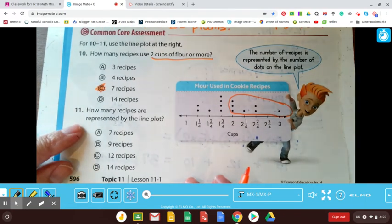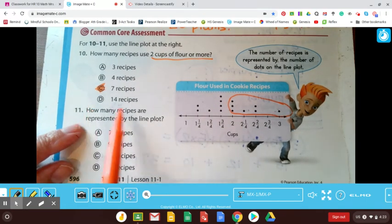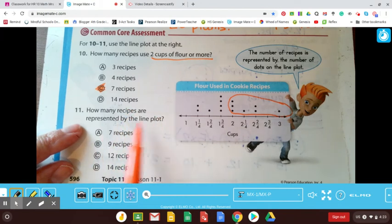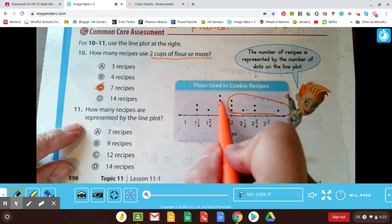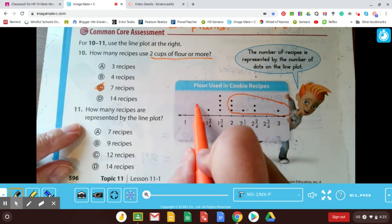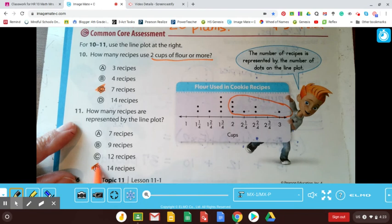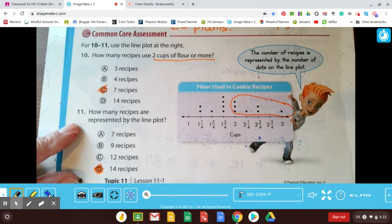And the last question for today, how many recipes are represented by the line plot? Like in all, I guess. So we had seven here. So eight, nine, ten, eleven, twelve, thirteen, and fourteen. So my answer would be choice D. And it's as simple as that.